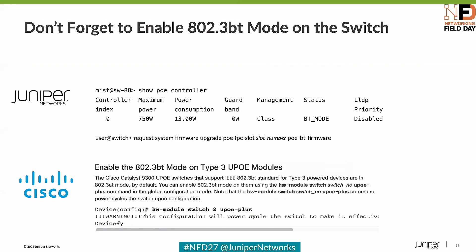Speaking of BT — remember to turn it on. On Juniper switches, it may or may not be on by default. You can check if you're in BT mode by running 'show poe controller.' On Cisco, you also need to enable BT mode, and I think most other vendors do as well. We had a customer just the other day who wanted to use the PoE-out functionality on our AP43, which requires BT power, and they had a Cisco switch with BT not enabled — so just remember to turn it on if you intend to use it.